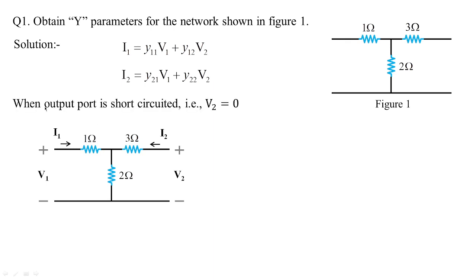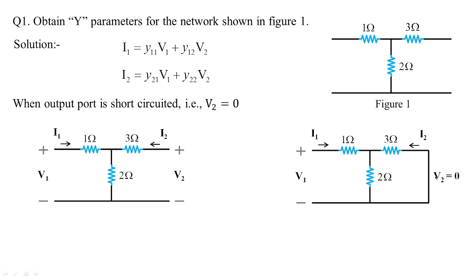We need to short circuit the output port in order to get I1 and I2 in terms of V1. This gives us Y11 and Y21 with V2 equal to 0. Since this port is shorted on the secondary side, the 3 ohm and 2 ohm resistors become parallel, and that combination is in series with the 1 ohm resistor. V2 is 0 but I2 will still be flowing into the circuit.